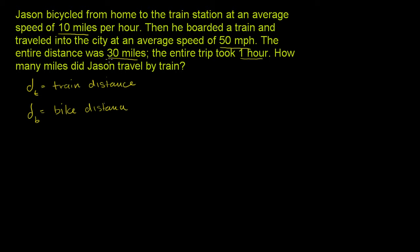Now, they give us one piece of information: that the total distance — the entire distance — was 30 miles. So that means the distance by train plus the distance by bike is 30 miles. I can write that as dt plus db equals 30 miles. That's what that constraint tells us.